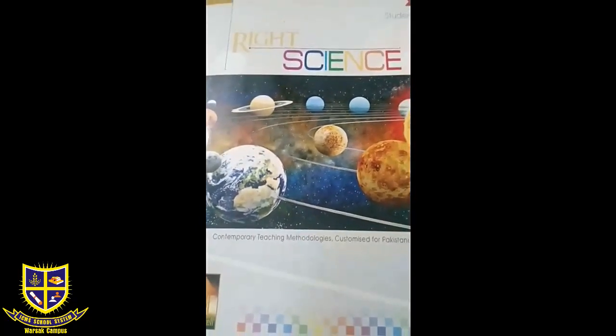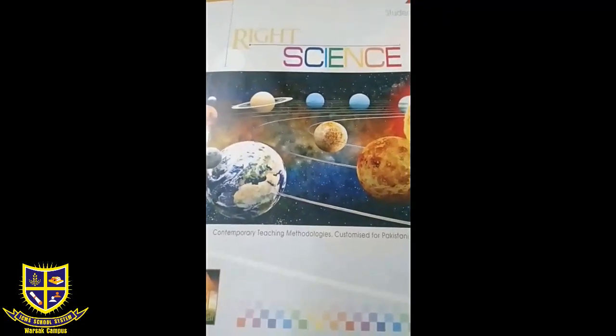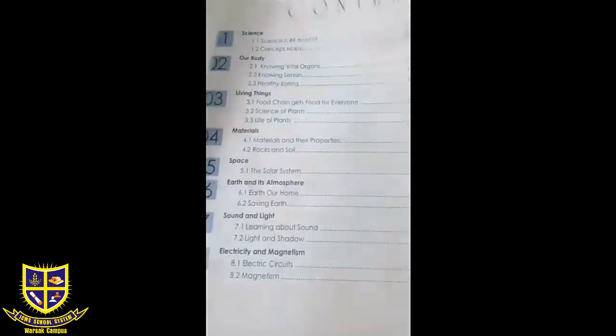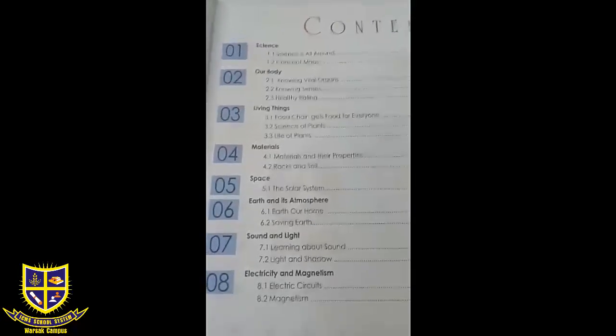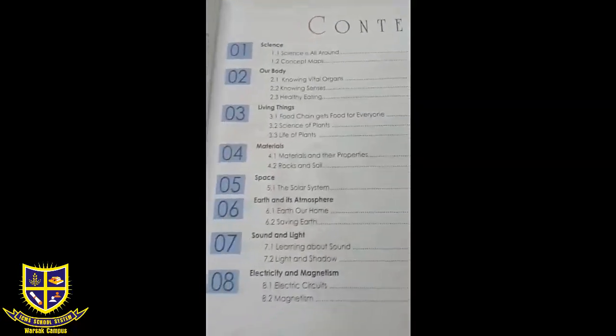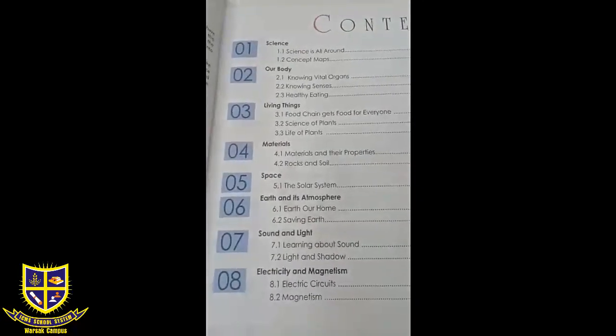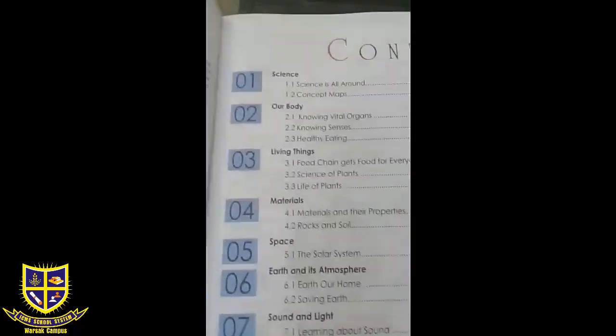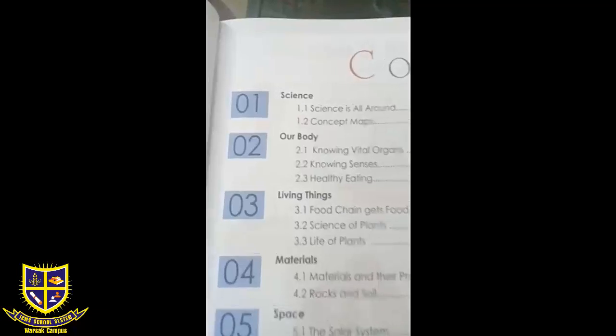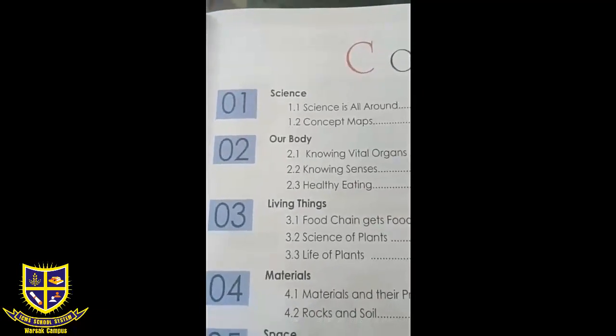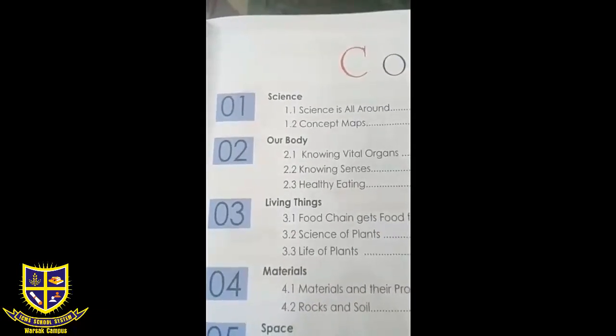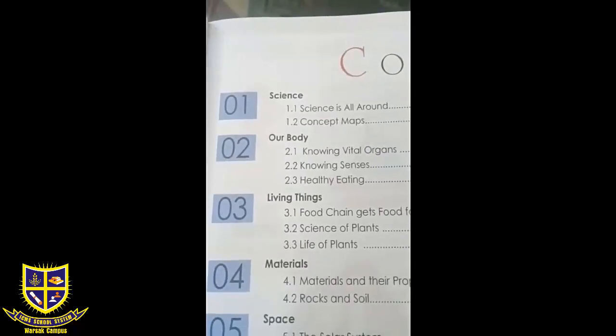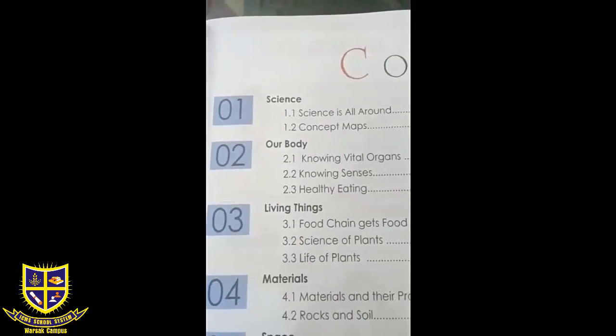Okay, I'm going to turn the title page. Here is your content page. There are eight chapters in your science book, but we are focusing on only four units in the first system. The first one is science, the second one is our body, the third one is related with living things, and the fourth one is about materials.